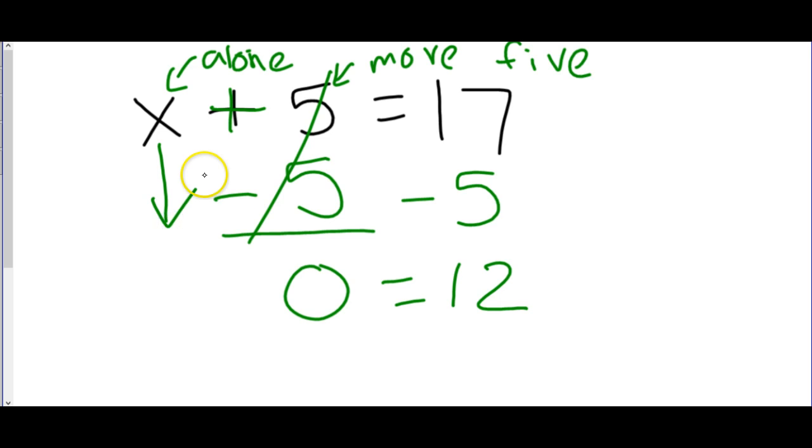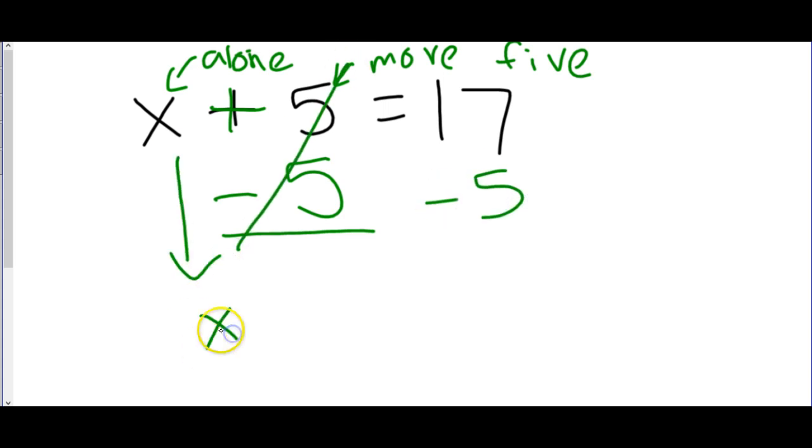And if there's something I didn't do anything with, I just bring it down. So I'd have x plus 0 equals 12. Well, usually we skip the step of writing in the 0, because x plus 0 is just x. So usually, instead of writing the 0 in, all we would do is say the 5s will cancel, bring the x down, bring the equal sign down, and then do the other side, 17 minus 5 is 12.